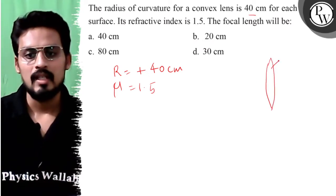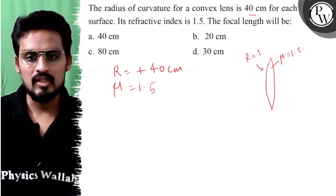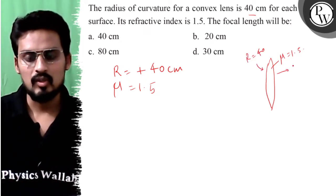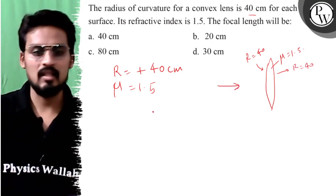Banalte hai, iska refractive index diya rakha hai 1.5. Is side wala radius of curvature hai 40 centimeter, or is side wala hai 40 centimeter. Main is taraf se incident rays aati hui maan raha hoon.